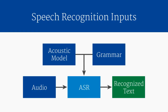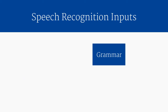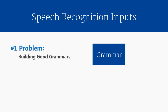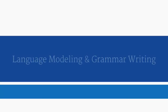In Speech Recognition 101, Part 1, we mentioned that one of the inputs to speech recognition is a language model, or grammar. Lumenvox finds that the number one problem new speech developers have is building good grammars. Experienced programmers often find that the nuance of modeling how users speak is more complex than they thought. Because grammars are such an important part of building speech applications, it's worth dedicating an entire video to an overview of language modeling and grammar writing.